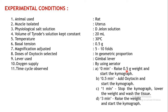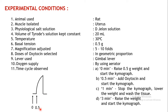The time cycle is as follows: at 0 minutes, raise the 0.5 gram weight and start the chymograph to record the baseline for 30 seconds (0 to 0.5 minute). At 0.5 minute, add oxytocin and start the chymograph to record the response. The contact time is just 30 seconds because it is a fast-contracting tissue, so from 0.5 to 1 minute the response is recorded.